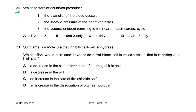Now coming to question number 30. Which factors affect blood pressure? The diameter of the blood vessels — yes. The systolic pressure of the heart ventricle, meaning when the ventricles contract, how much pressure is exerted on the blood, and the pressure in the aorta — all arteries arise from the aorta, basically the systolic pressure is that of the arterial blood. The volume of blood returning to the heart in each cardiac cycle — yes, the more the volume returning, the more the blood in the blood vessels. So the answer is A: 1, 2 and 3.